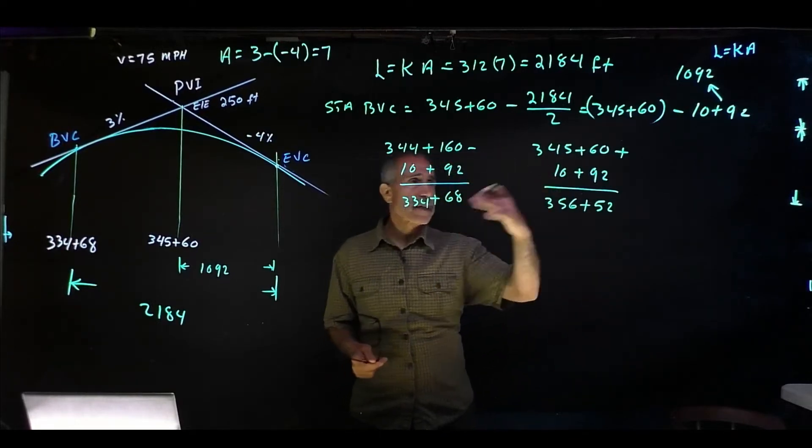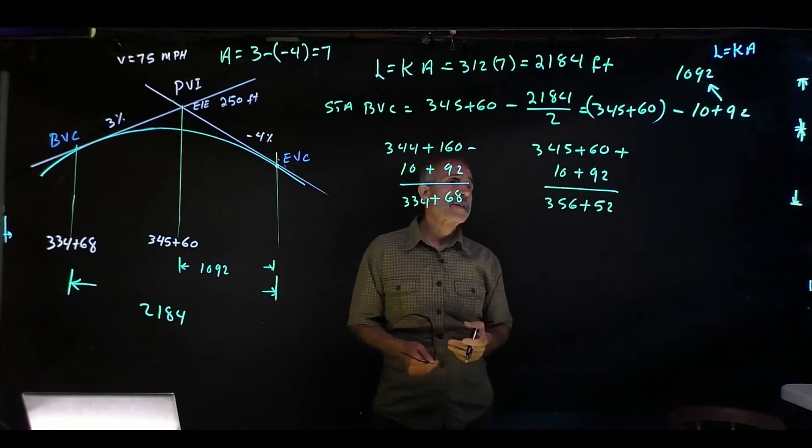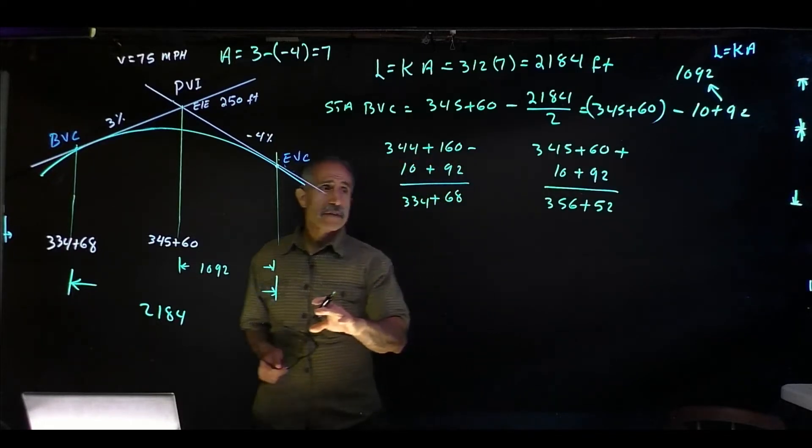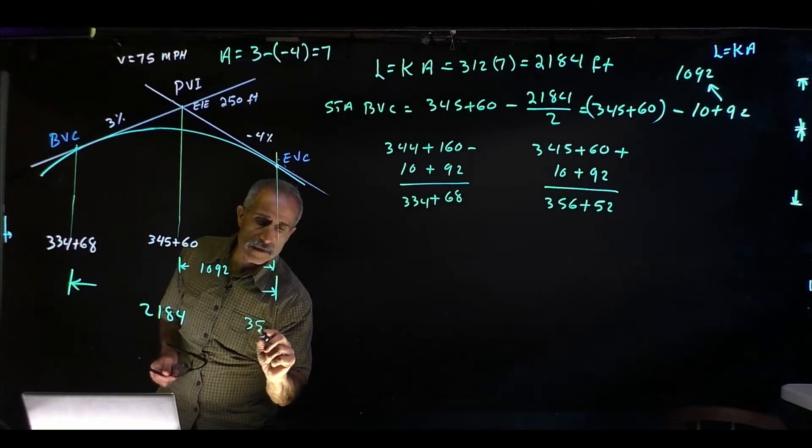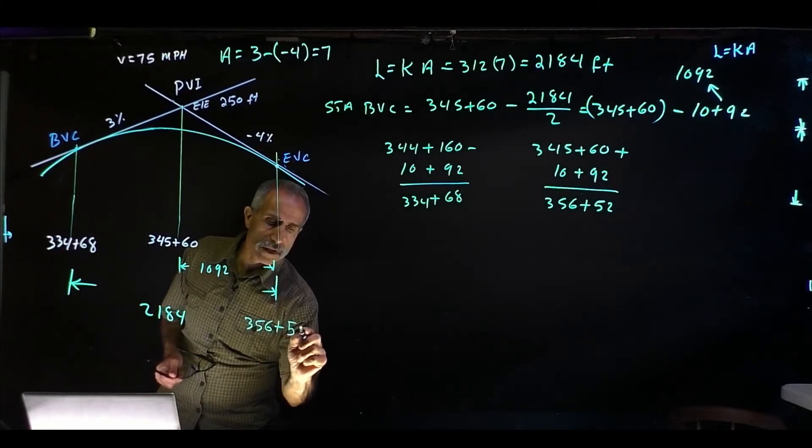Double check that. It's really a simple algebraic equation, nothing to it. So now we have this station become 356+52.